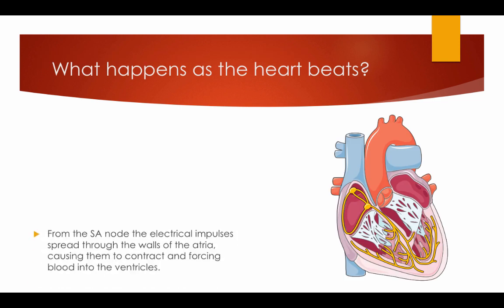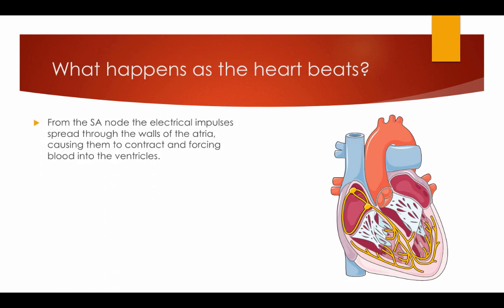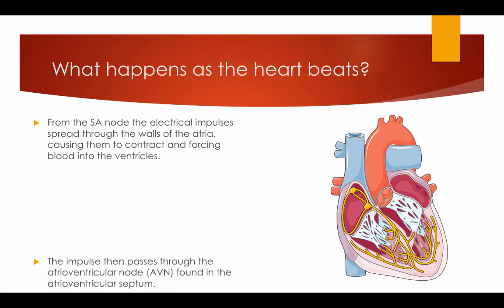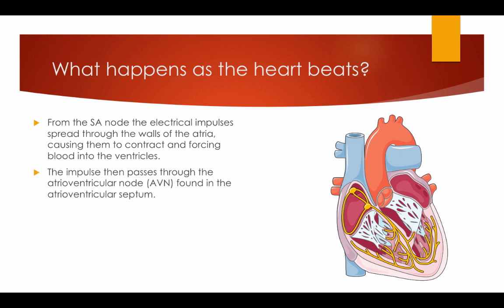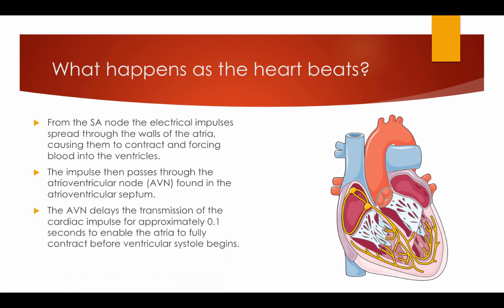What happens as the heart beats? From the SA node, the electrical impulses spread through the walls of the atria causing them to contract, forcing the blood into the ventricles. The impulse then passes through the atrioventricular node, AVN, found in the atrioventricular septum. The AVN delays the transmission of the cardiac impulse for approximately 0.1 seconds to enable the atria to fully contract before the ventricular systole begins.